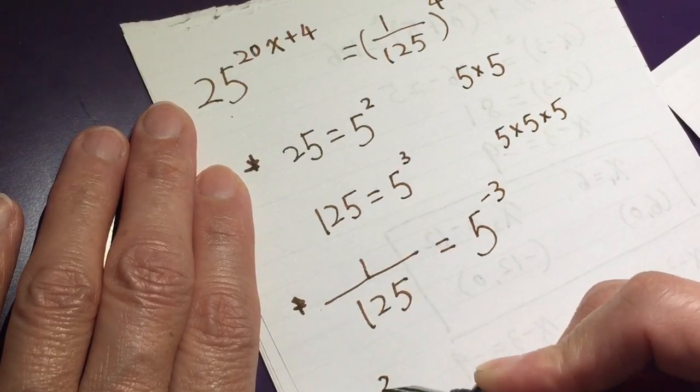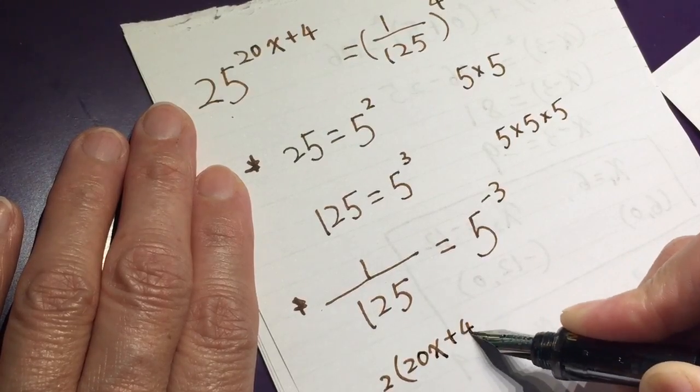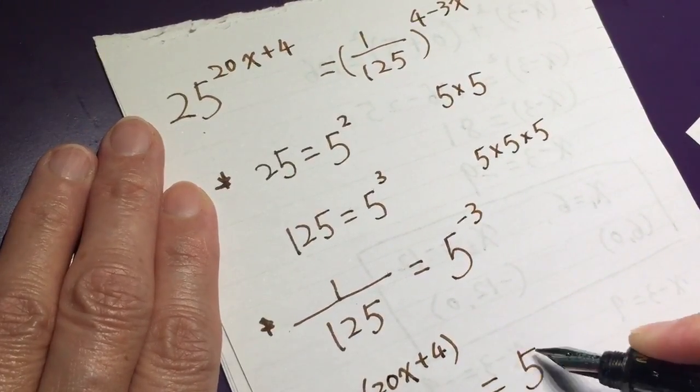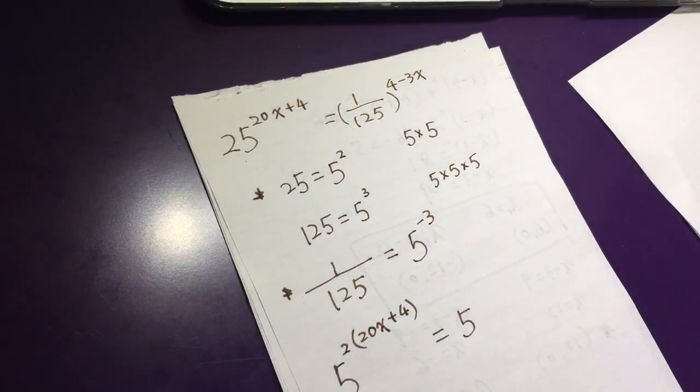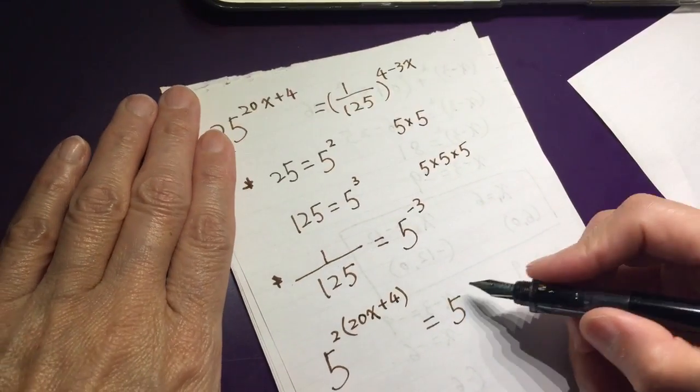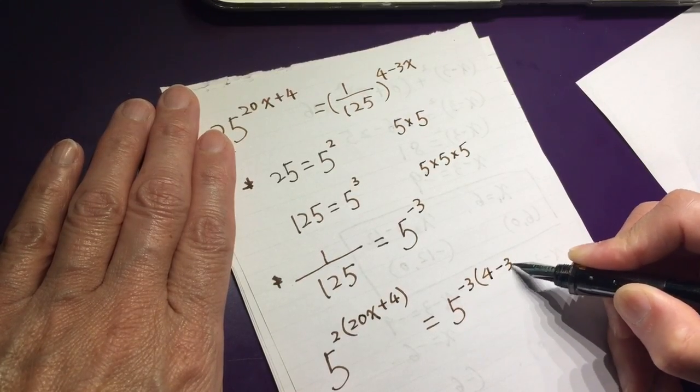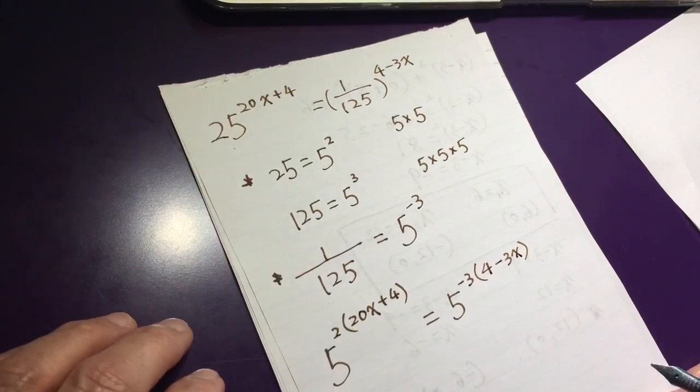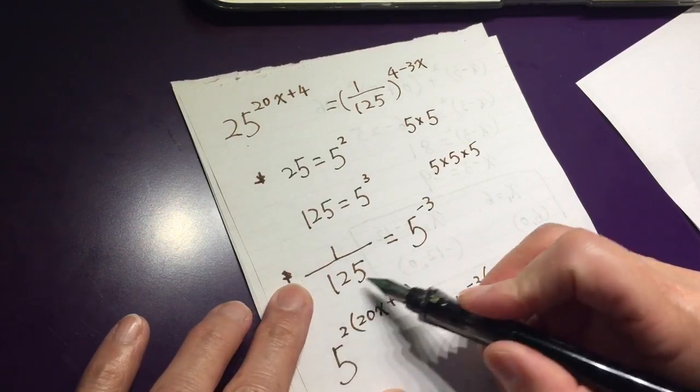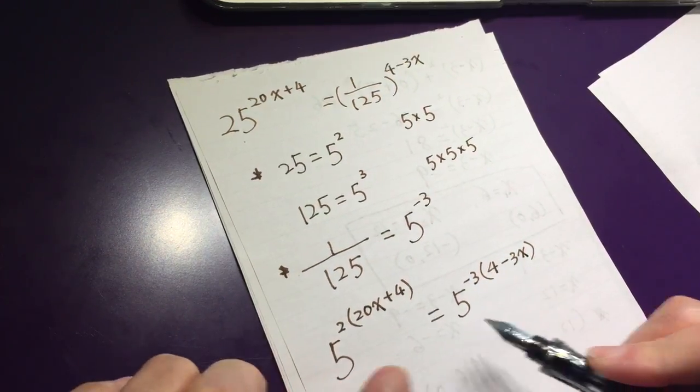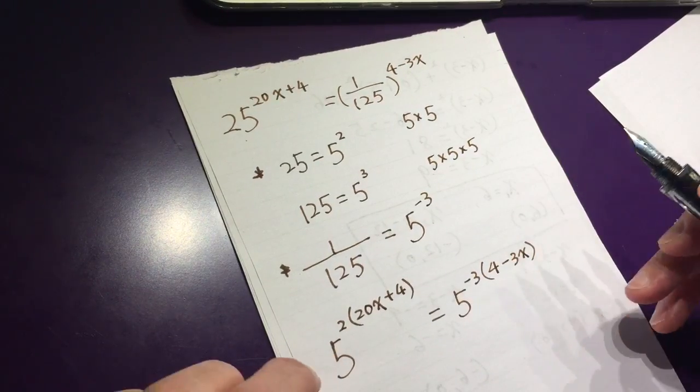So 5 to the power of 2 times 20x plus 4 equals 5 to the power of negative 3 times 4 minus 3x. Does it make sense? They are on the same base. If they are on the same base, the power, the number with the same base is equal. It means the power is equal to the power.